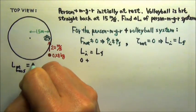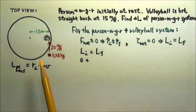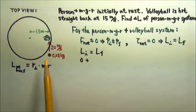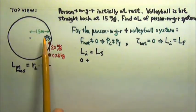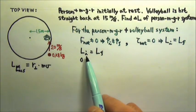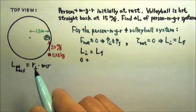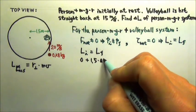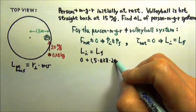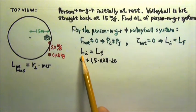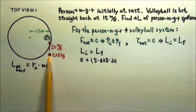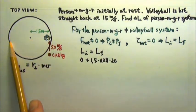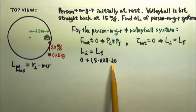That's the perpendicular r times mv. The perpendicular r is the distance between the line of motion and the axis — that perpendicular distance is 1.5 meters. So the initial angular momentum of the volleyball is 1.5 meters times the mass times the velocity. Angular momentum is a vector, so we have to be careful with direction. The angular momentum of the volleyball before it's hit is counterclockwise, so if we use counterclockwise as positive, we'll use negative for the clockwise direction.